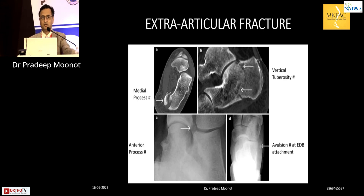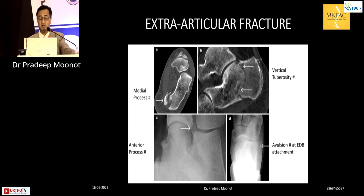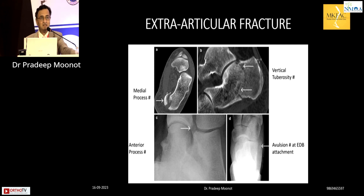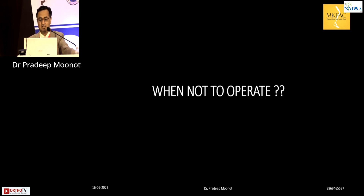Not all calcaneal fractures are intra-articular. Extra-articular fractures include tuberosity fractures, small medial process fractures, and body fractures. Don't forget anterior process fractures, which can occur with twisting ankle injuries — if the fragment is quite large, it may need fixation. Sometimes there is also an avulsion fracture of the extensor digitorum brevis attachment.